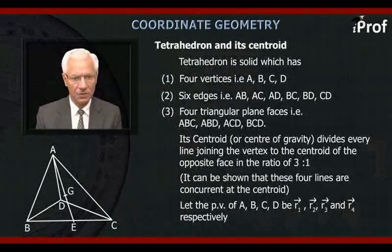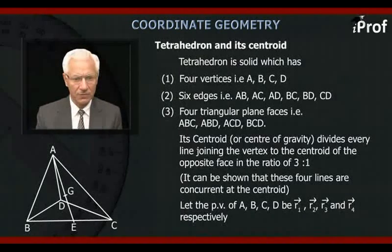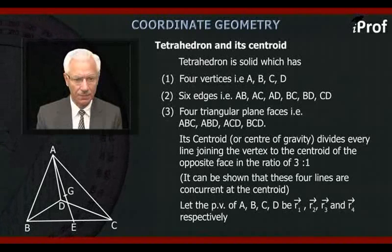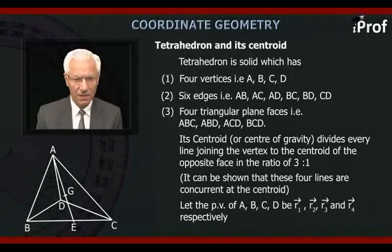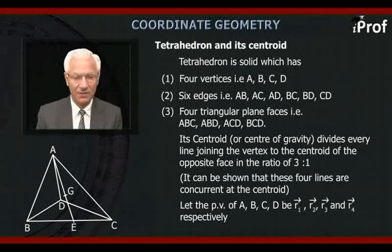Tetrahedron is a solid which has four vertices A, B, C, and D, and six edges which are AB, AC, AD, BC, BD, and CD. Also it has four triangular plane faces, which are ABC, ABD, ACD, and BCD.